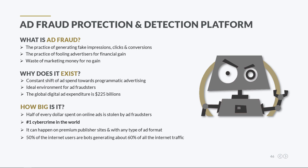Ad fraud is the number one cybercrime in terms of revenue, and the second most profitable organized crime globally after drug trafficking. It can happen in well-known publisher sites such as the New York Times or BBC, and in any ad format such as banner, video, and native ads. Another interesting fact is that about 50% of internet users are bots, which generate about 60% of all internet traffic.